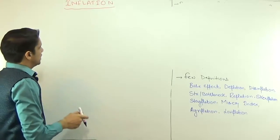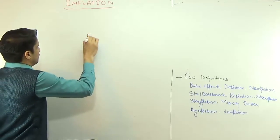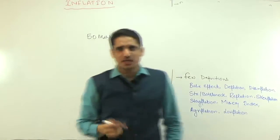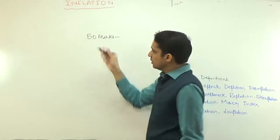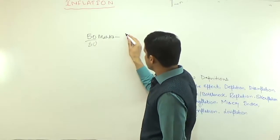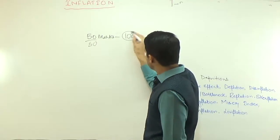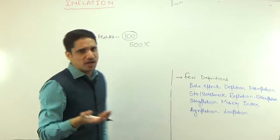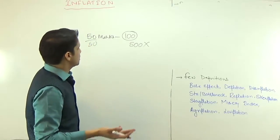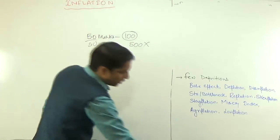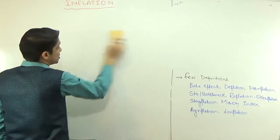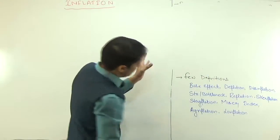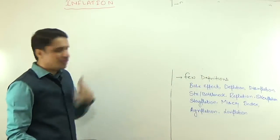If I say that you have scored 50 marks, unless and until there is a base, I cannot say those 50 marks are good or bad. If it is out of 50, it is very good. If it is out of 100, maybe it is good. If it is out of 500, it is bad. So unless you have a base, you cannot tell whether your marks are good or bad. But what if the base is changing? In that scenario, the change in base may change the definition of good or bad.